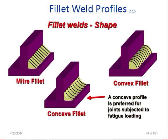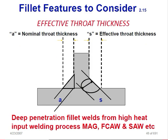Fillet weld profile — three types: flat (mitre) weld which is straight, concave weld which is U-shaped, and convex weld which is V-shaped. A concave profile is preferred for joints subjected to fatigue loading. Effective throat thickness: A is the normal throat thickness and S is the effective throat thickness for deep penetration fillet welds from high heat input welding processes — MAG, FCAW, and SAW — where the deep penetration fillet is applicable.